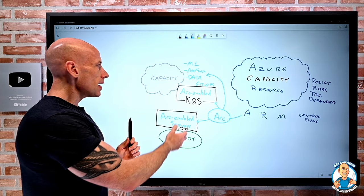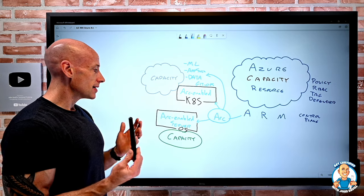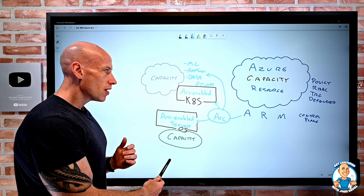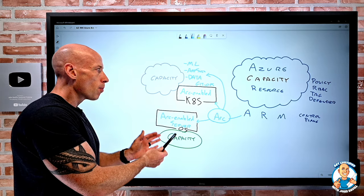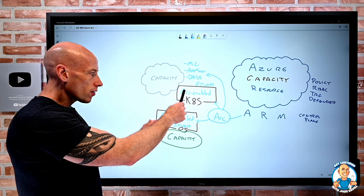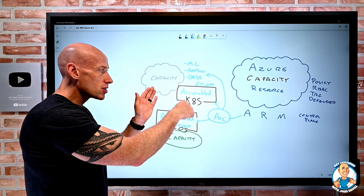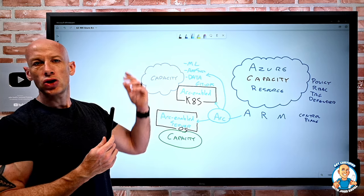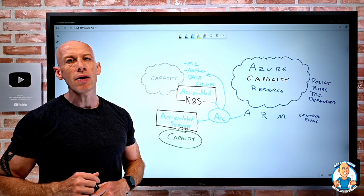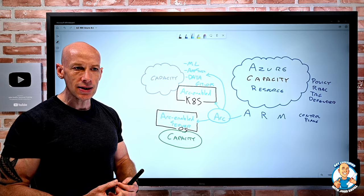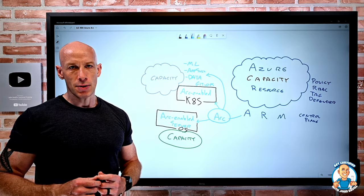But hey, if that capacity is in other places as I need it, it doesn't matter. Arc-enabled servers, Arc-enabled Kubernetes, on-prem in other clouds. Then on this Kubernetes, wherever it resides, data, app, machine learning. That's what Arc is. It's bringing those Azure capabilities to wherever I have that capacity.